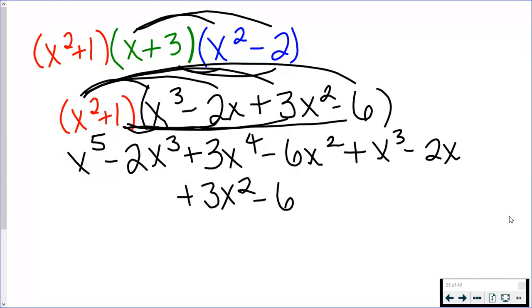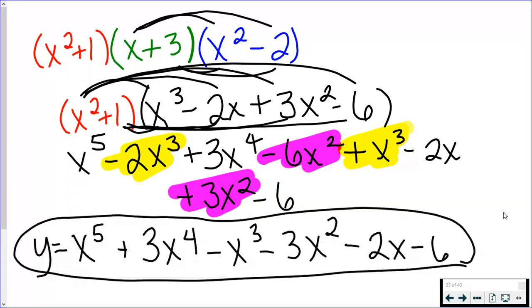Now all I need to do is combine like terms. So I've got my like terms highlighted here. x⁵ is on its own. Plus 3x⁴ is on its own. I have a -2x³ and a positive x³ that I need to add. That would equal -x³. I also have a -6x² and a 3x² that I need to add. That would equal -3x². And then I have -2x and -6 on its own. So we finally made it to the end. I know it's a pain that you have to do all that FOILing, but you've got to put your answer in standard form, and that's how you would do it.